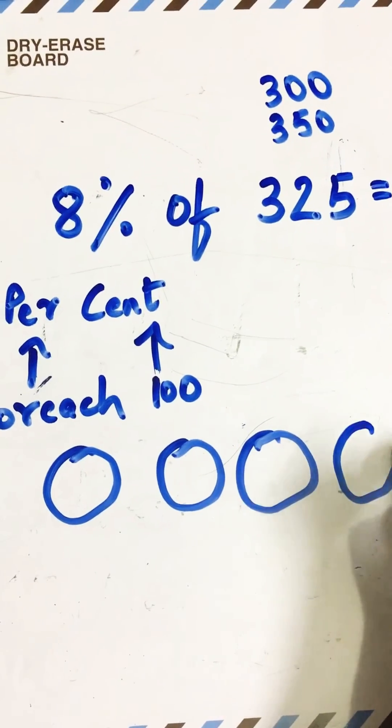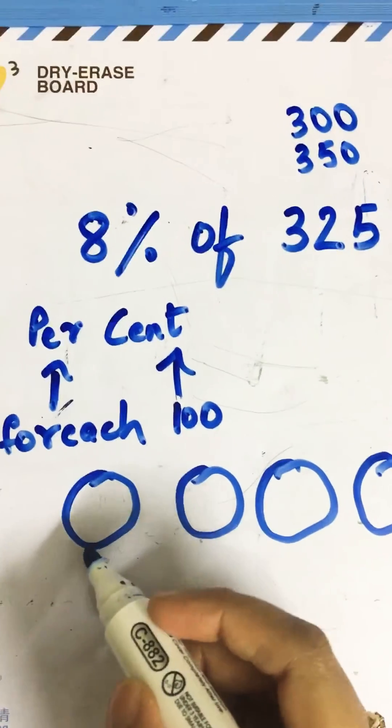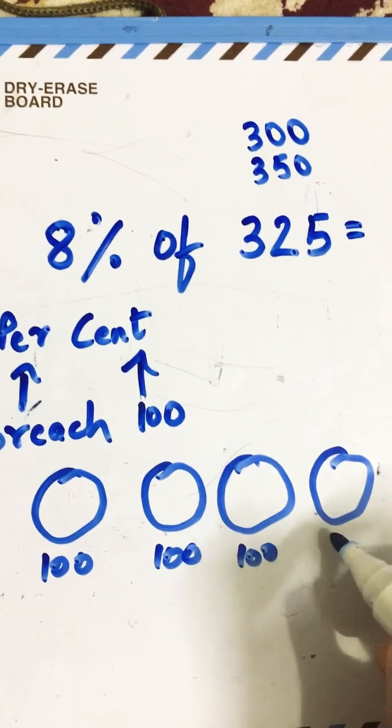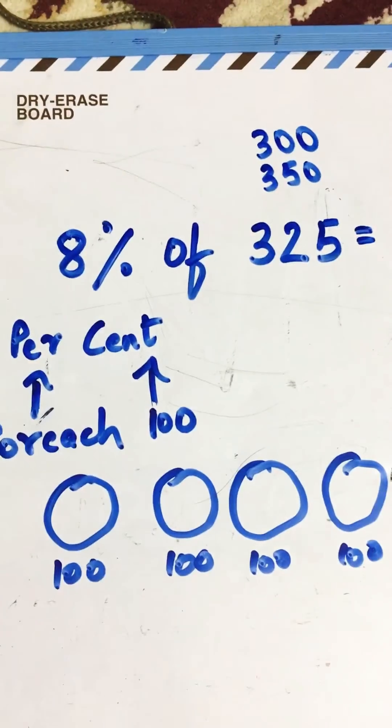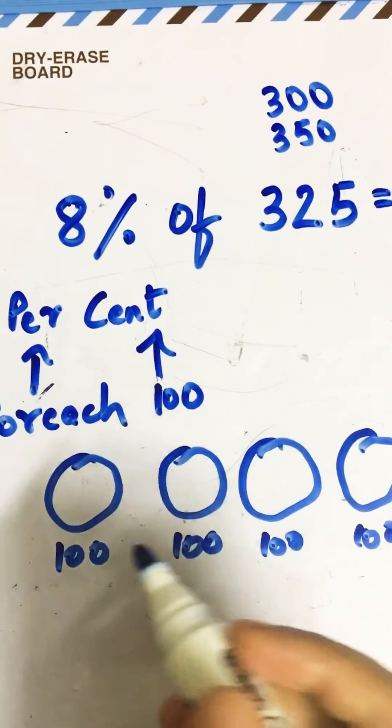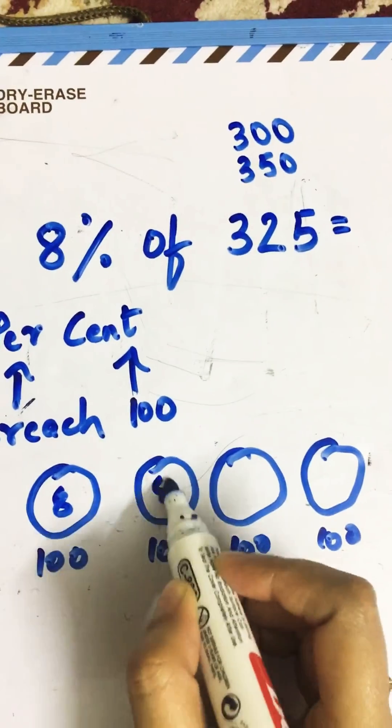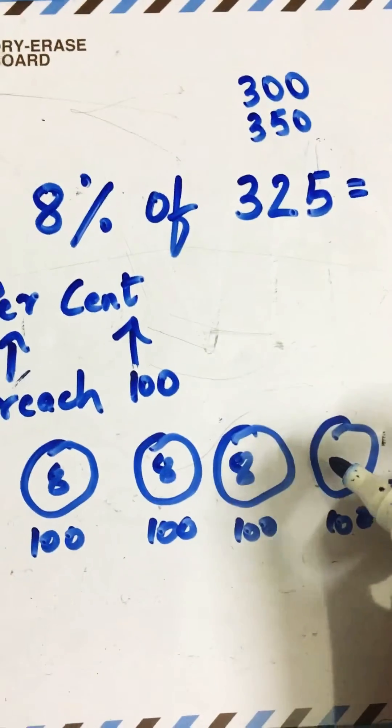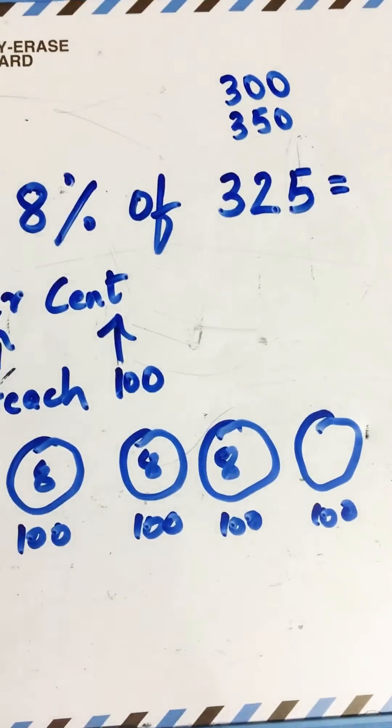That's four hundreds. So let's write down: this is hundred, hundred, hundred, and hundred. How many eights do we have in each hundred? Eight, eight, eight for three hundreds. Now 25 means it's one-fourth of a hundred, so we'll divide a hundred in four parts.